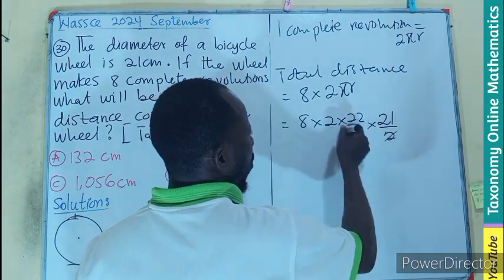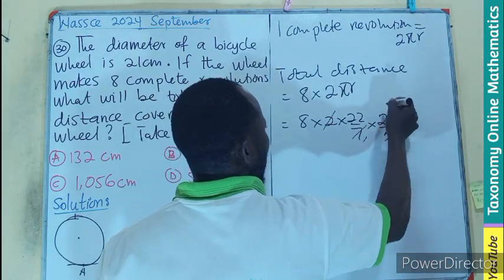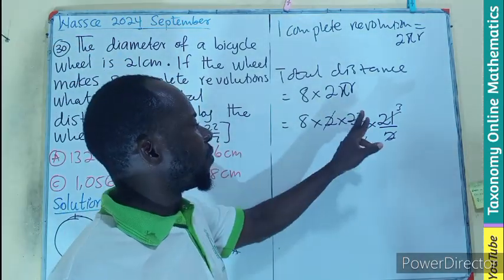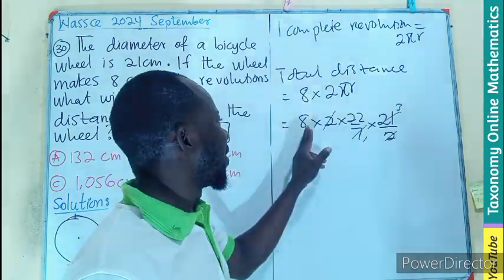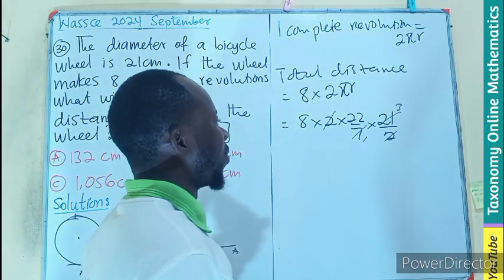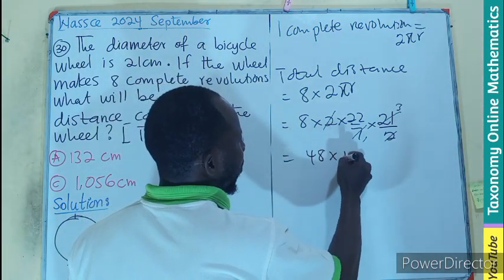Let's see. 2 will cancel this. 7 will go in here 1, and go in here 3. So what are we left with? We are left with 2 times 11. So 2 times this is 6, 6 times 8, that's 48. So we are going to have 48 times 11.